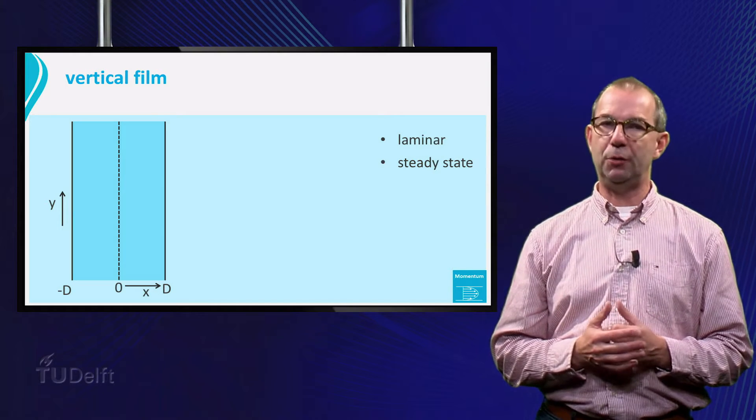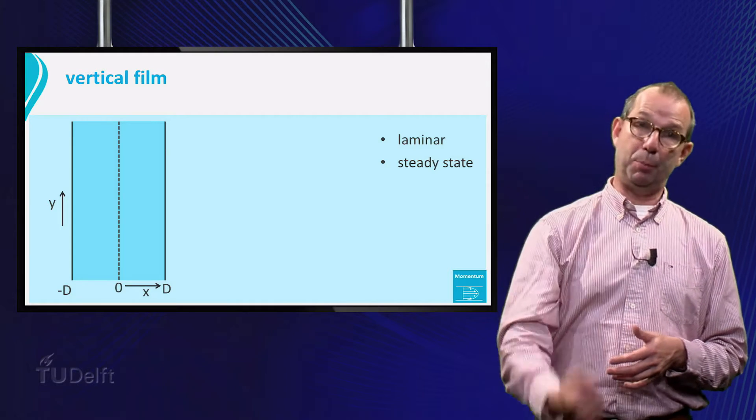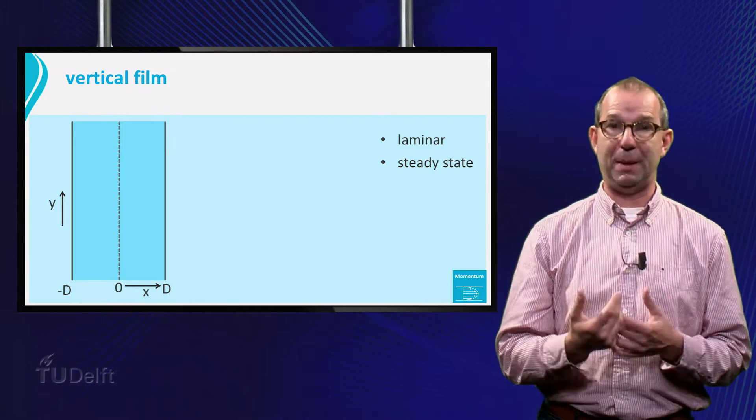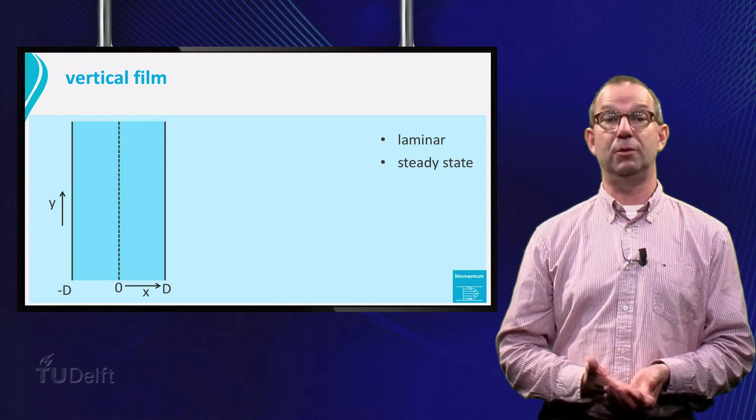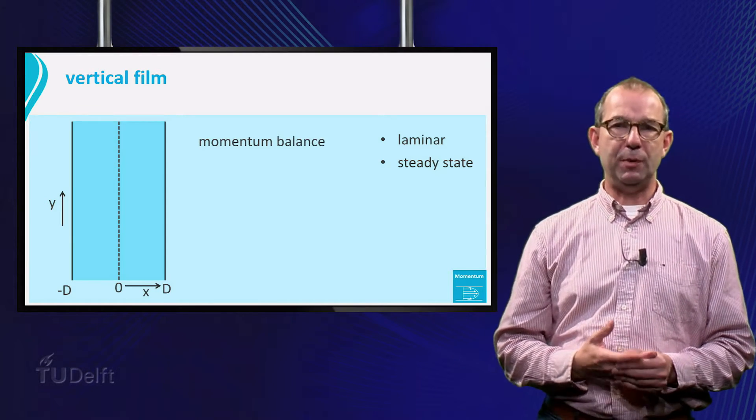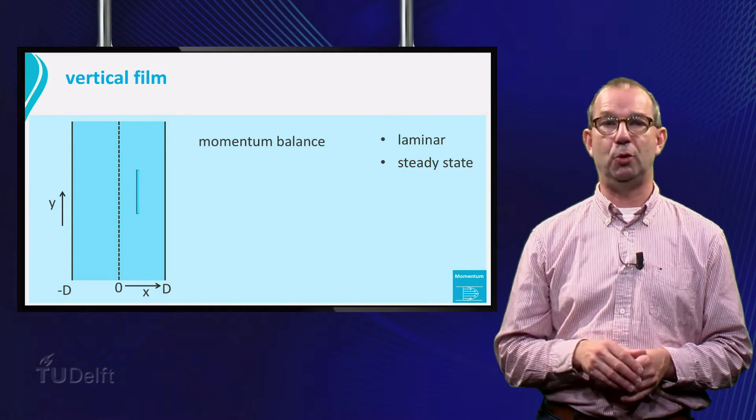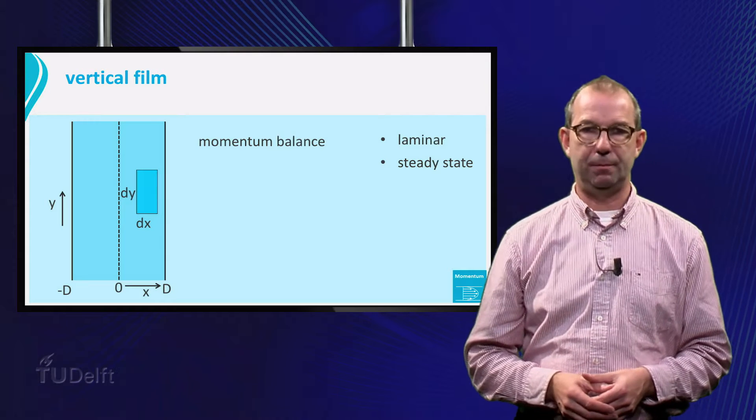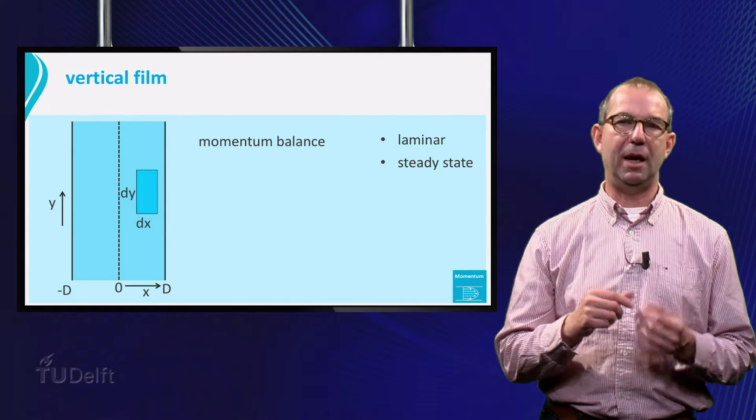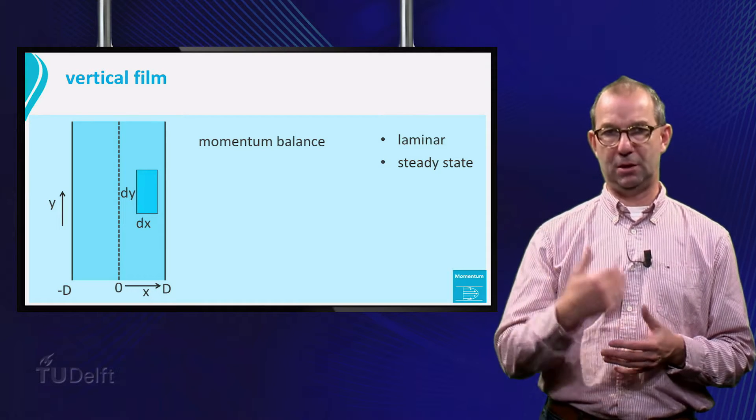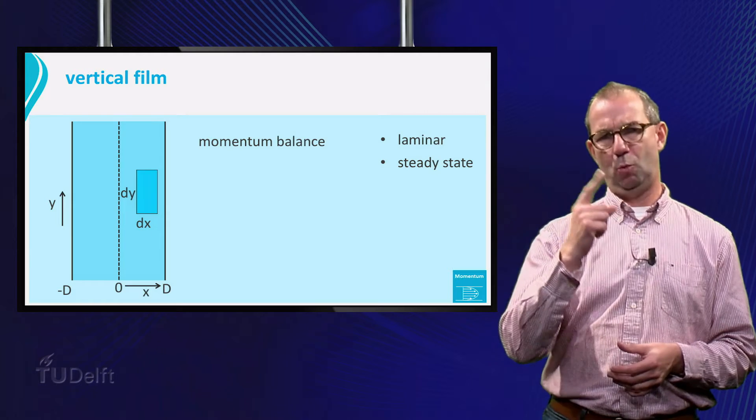Alright, why will the fluid be flowing anyhow? In this case, gravity will pull the fluid down, and we can expect that the two plates will try to slow the resulting motion down. As we deal with velocity, we are going to set up a momentum balance for a small control volume somewhere in the fluid. It has size dx dy and a width w perpendicular to the sheet. Next question. Which momentum?